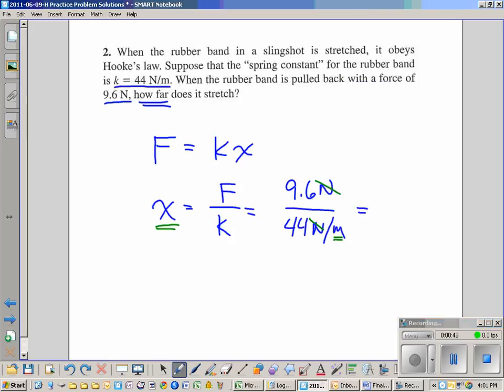9.6 divided by 44 is 0.218, or 0.22 meters. And box it.